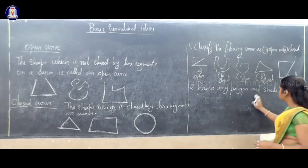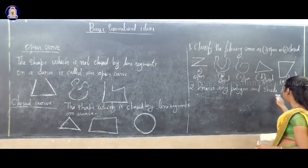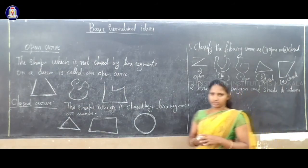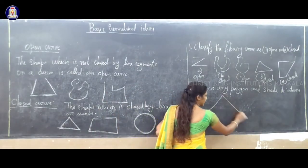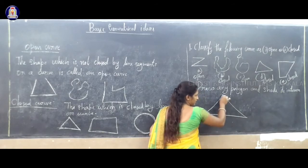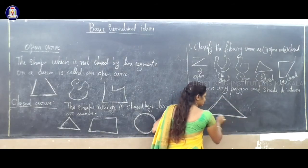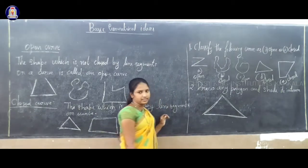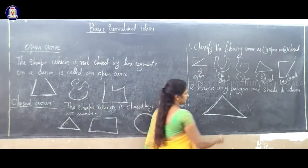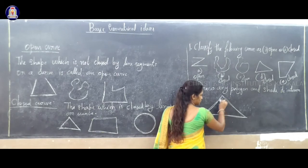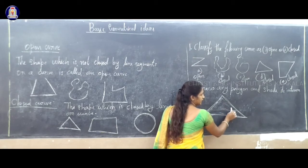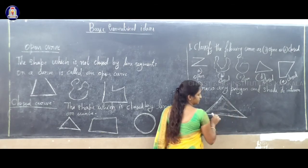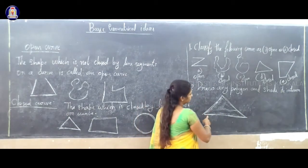Here they ask to draw one polygon and shade its interior. If I draw a triangle — triangle is a polygon with three line segments: one, two, three. This is a closed figure. This is a polygon. When they ask to shade interior, that means the inside of the triangle — the interior part. Shade it.